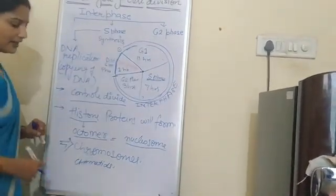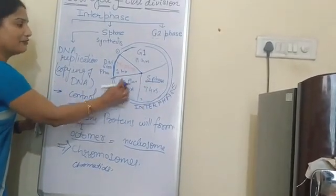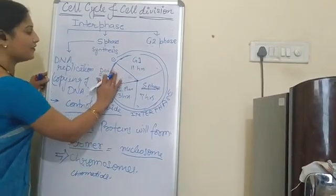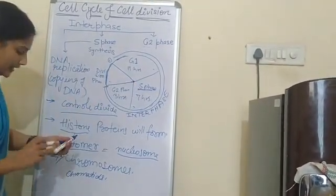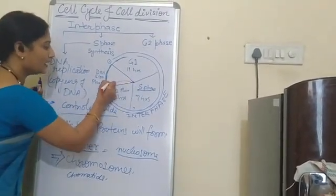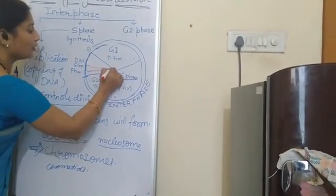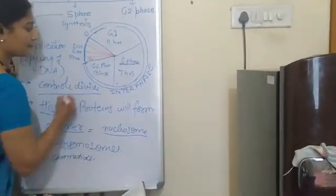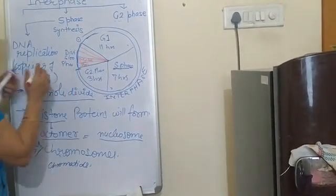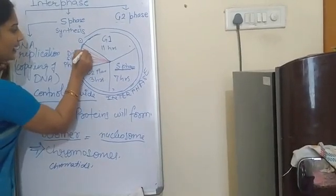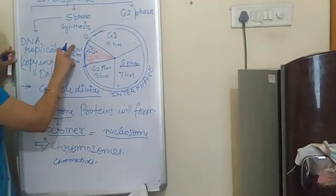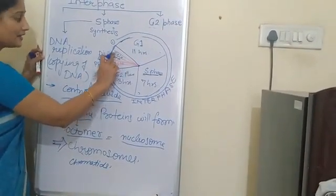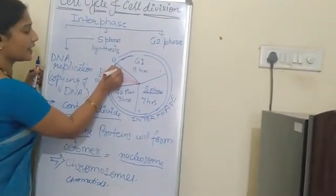In G2 phase, the cell prepares itself for the multiplication phase or division phase. Then we come to the M phase or multiplication phase. The multiplication phase can be divided into four different sub-phases: prophase, metaphase, anaphase, and telophase, and finally there is cytokinesis.